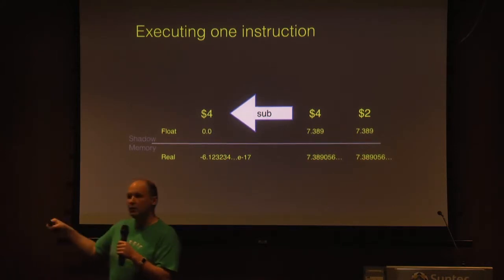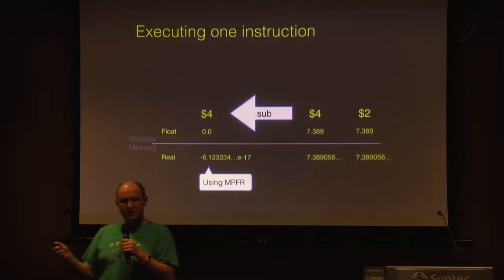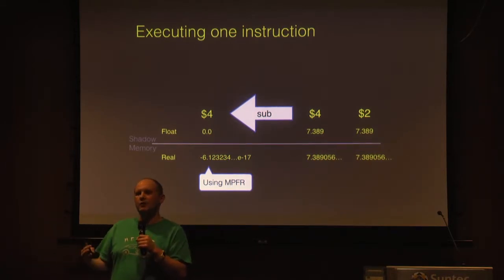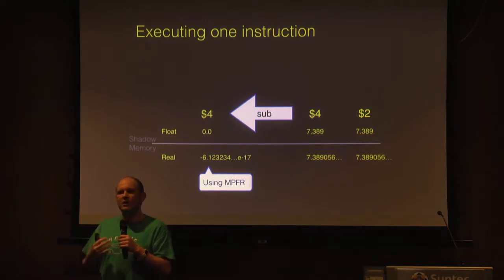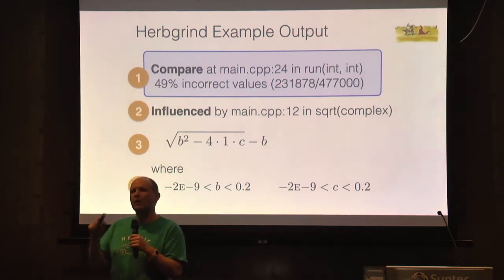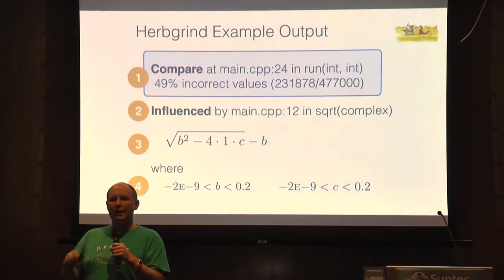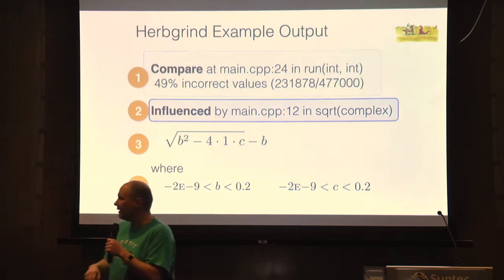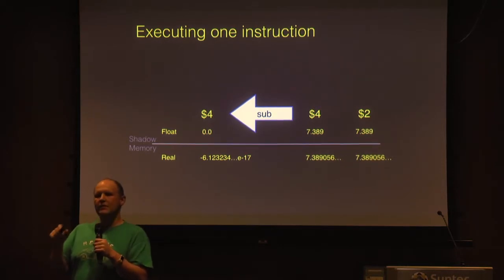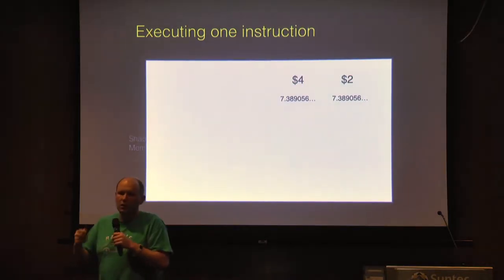This way I can tell if the outputs are accurate — whenever a value is converted to int, I take a branch on a floating point value, or I print it, I can compare what MPFR says the value should be versus what it actually was dynamically. That lets me figure out where error is showing up in the output. But it doesn't tell the programmer what they might need to change about their program to reduce that error. So how do we get the rest of this information?